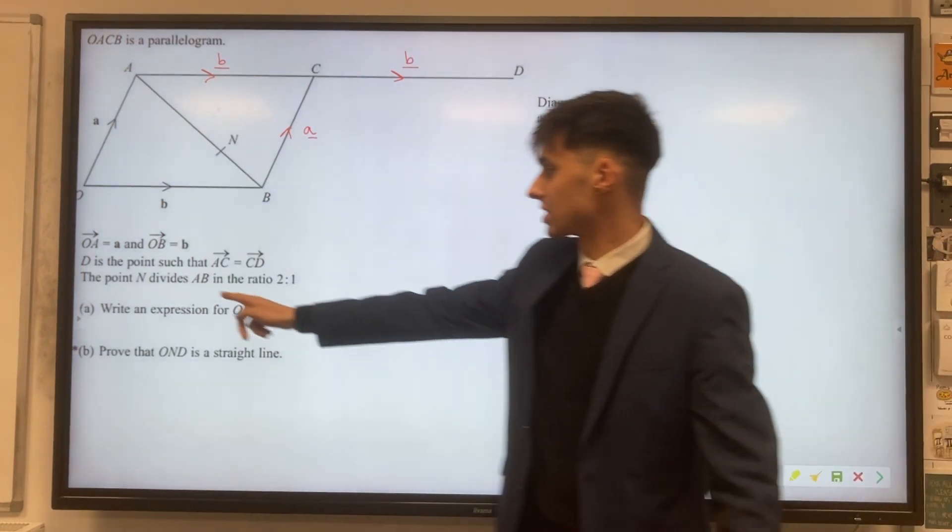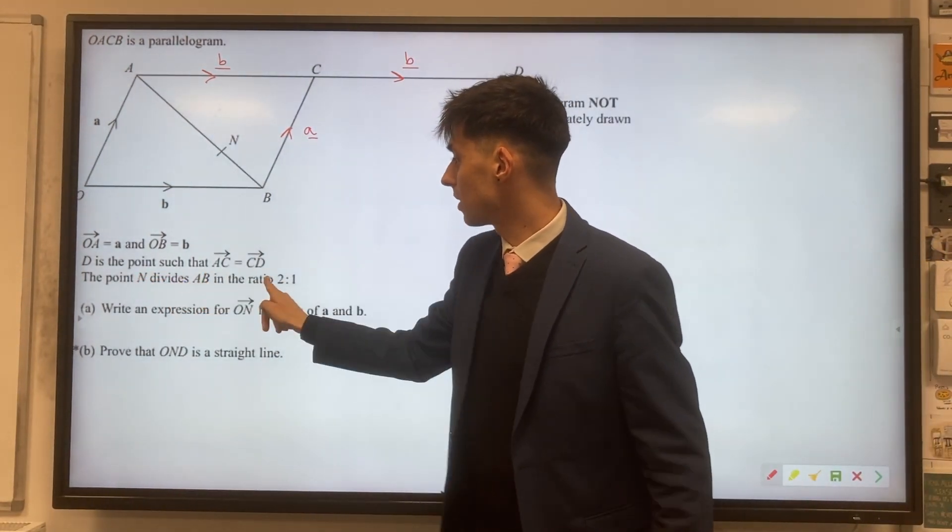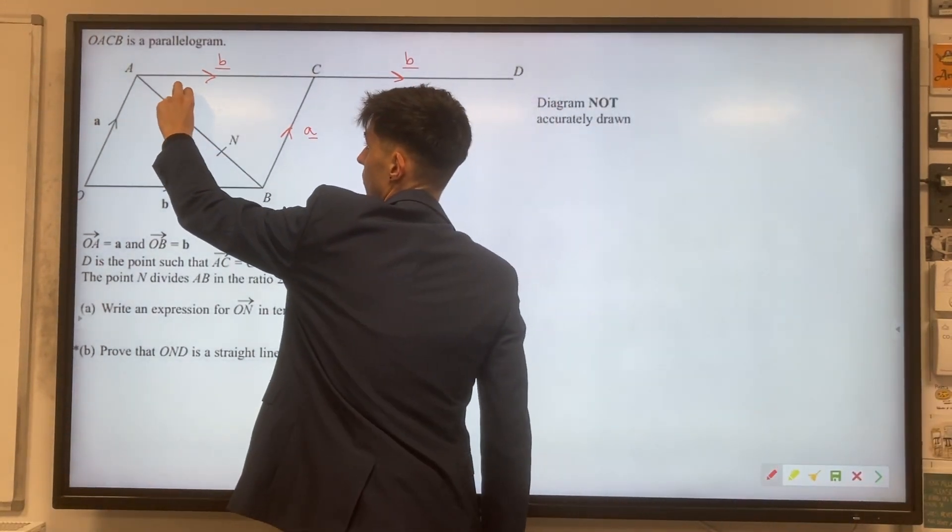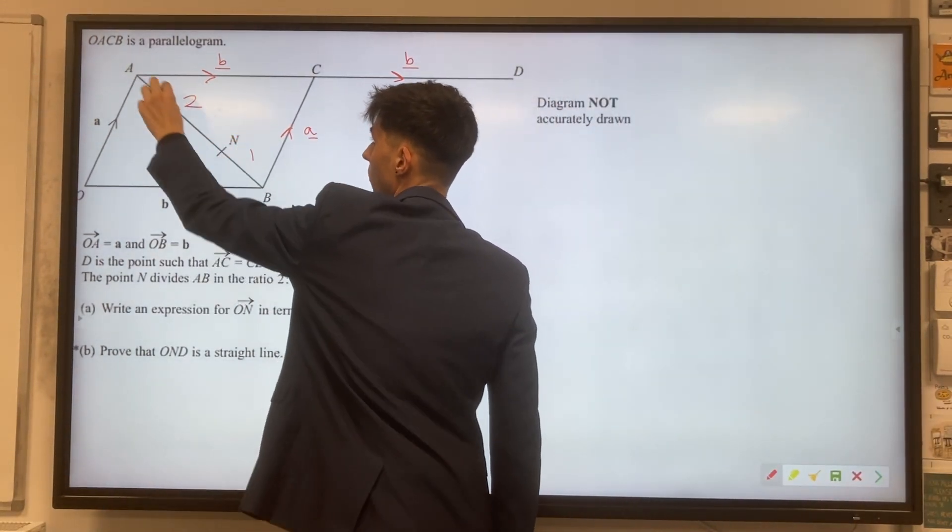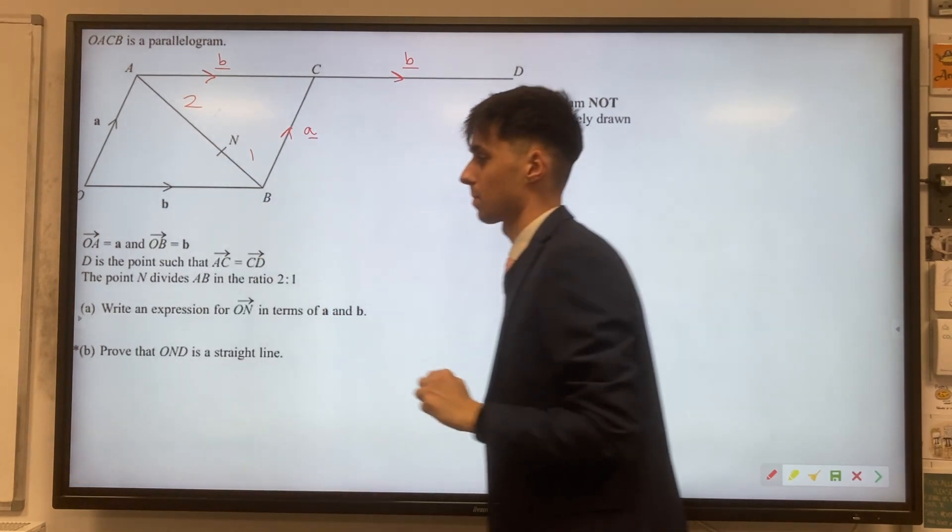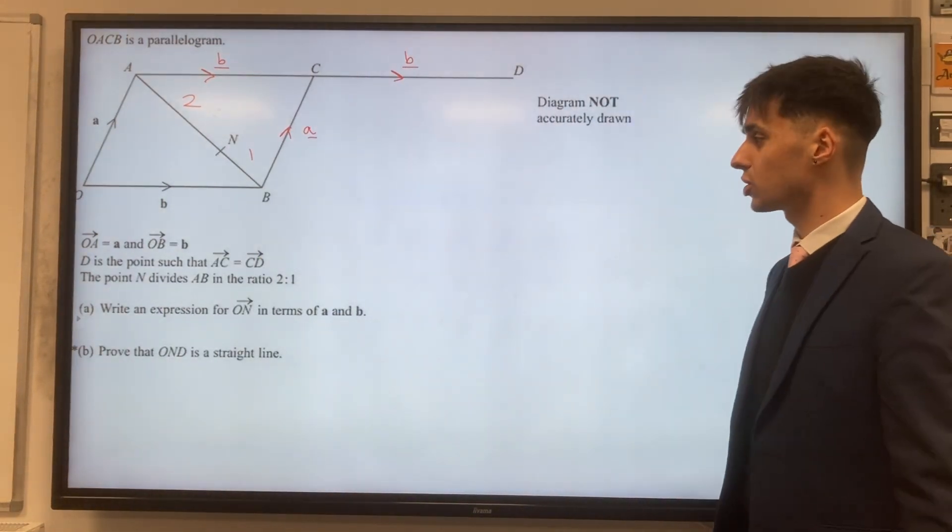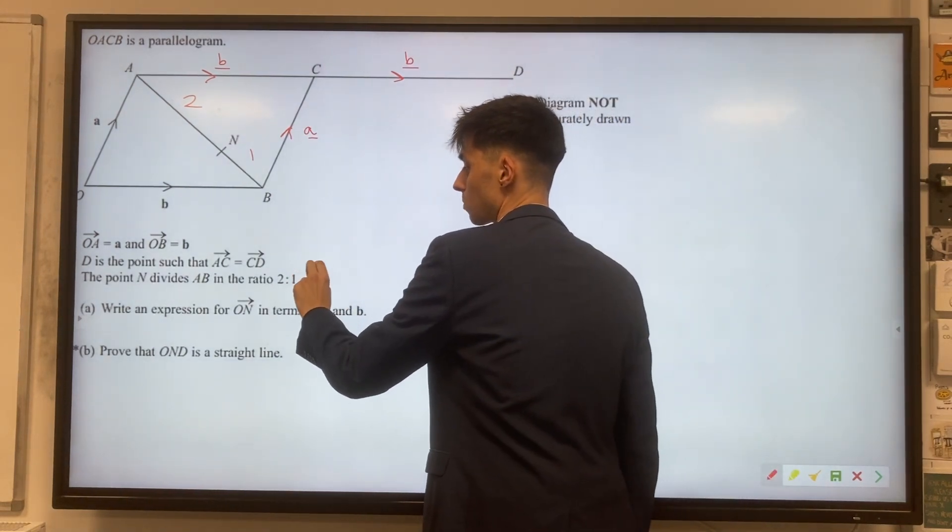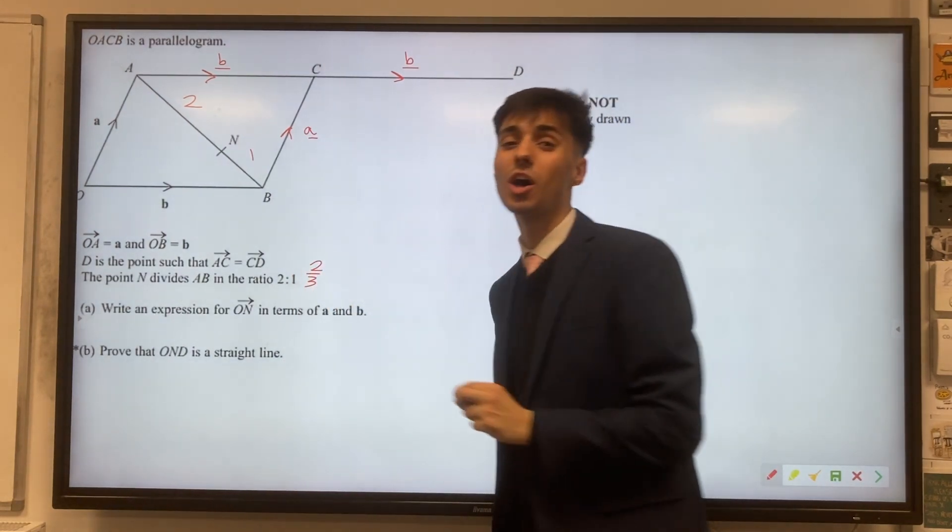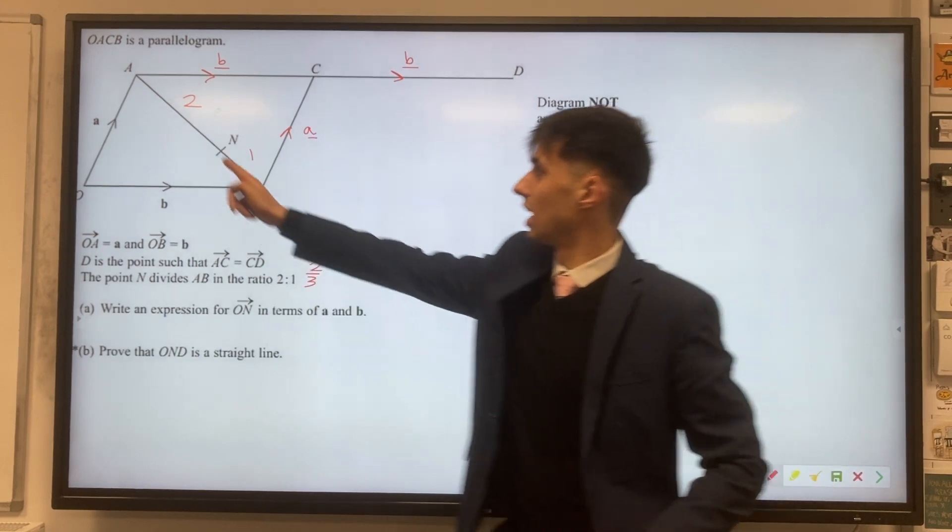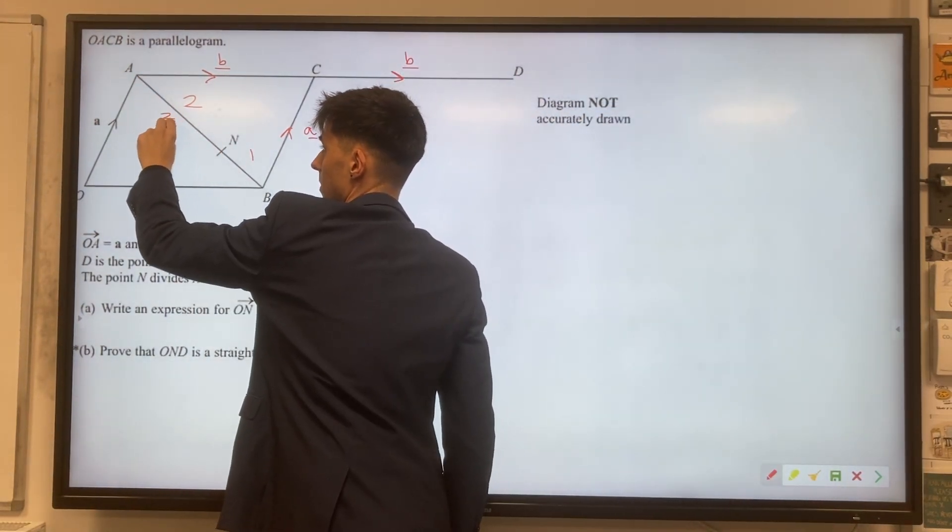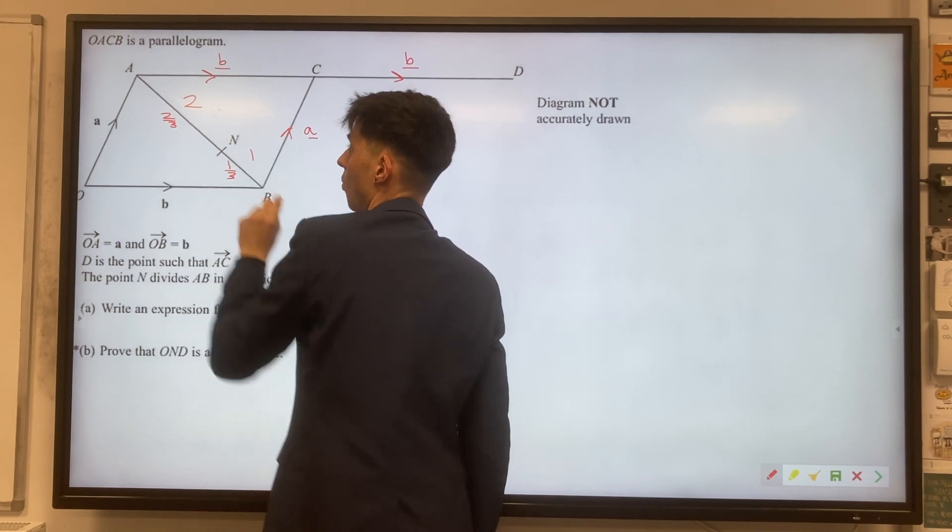And the last important thing about the diagram is that the point N divides AB in the ratio 2 to 1. So let's mark it on the diagram, this ratio 2 to 1 for these two lines. And whenever we see ratio in one of these questions, we should be thinking about a fraction. We're going to be working with a fraction of two-thirds. As in A to N is two-thirds of this line, and this is the remaining one-third.